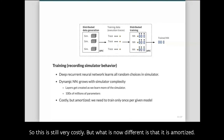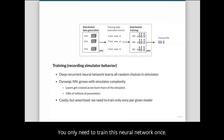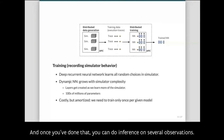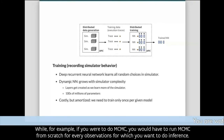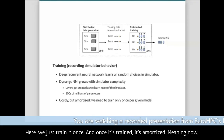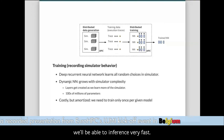This is still costly, but now it is amortized — you only need to train the neural network once, and once trained you can do inference on many observations. With MCMC, by contrast, you would have to run it from scratch for every observation. Here, once the network is trained, inference is very fast.